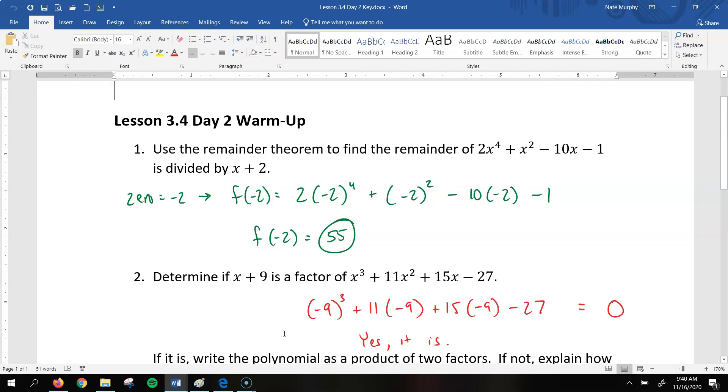All right, so this first one you should have gotten, the remainder would be 55. Now how do you do that? Remember the remainder theorem means that you're going to put whatever the 0 is for what we're dividing by and put that into the function